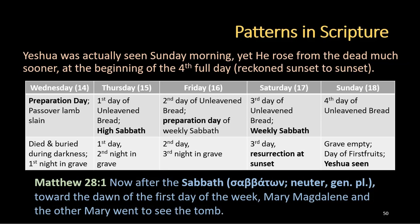Matthew 28:1 says, 'Now after the Sabbath, toward the dawn of the first day of the week, Mary Magdalene and the other Mary went to see the tomb.' The problem is that the word sabbaton is a neuter genitive plural — it should say 'now after the Sabbaths,' not 'now after the Sabbath.' There were two Sabbaths that week: the high Sabbath, which is the first one for the feast of unleavened bread, and the weekly Sabbath. What the writer of Matthew is telling us is that Yeshua rose from the dead after at least two Sabbaths, but we're oblivious to that because our translators failed to translate this properly.